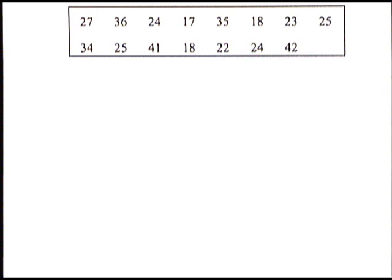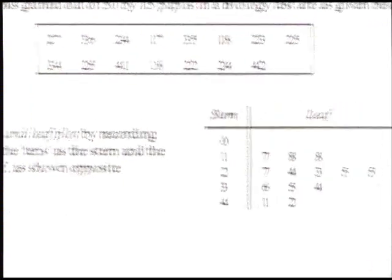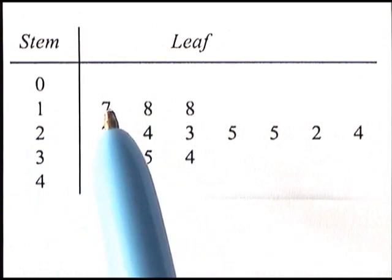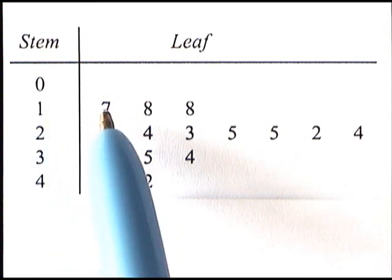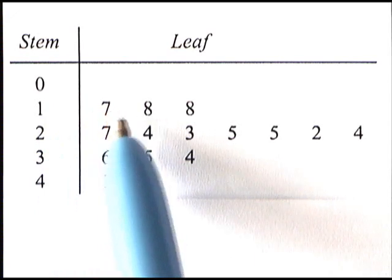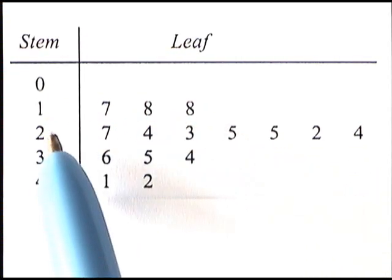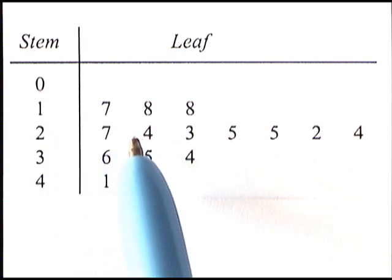If I wanted to work out anything about them — the mean, the median, the highest and lowest mark — it's easier if those numbers are written down differently. On the right is an example of a stem and leaf diagram. All the numbers from the table appear here. This 7, because it's to the right of the 1 in the stem, means 17. There's a mark of 18 and another mark of 18.